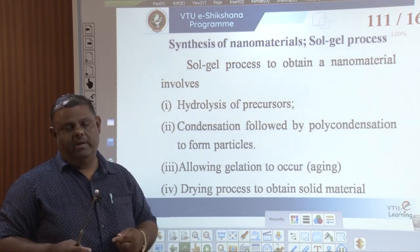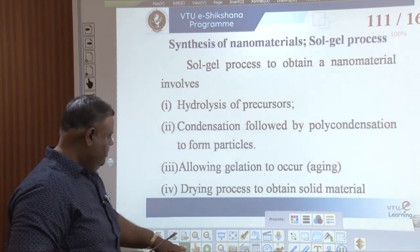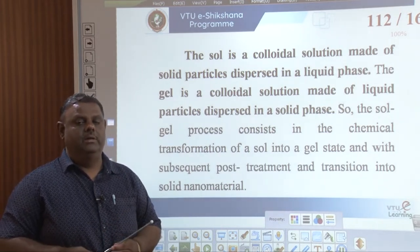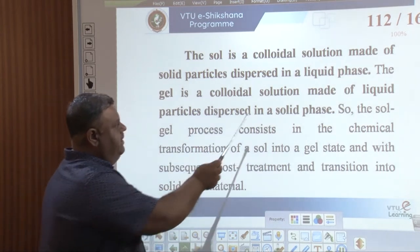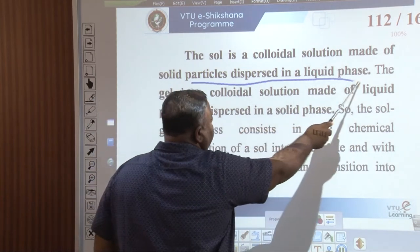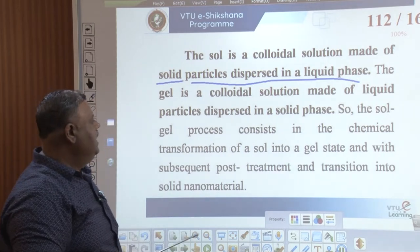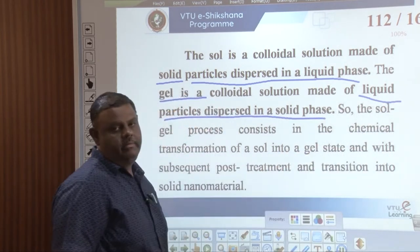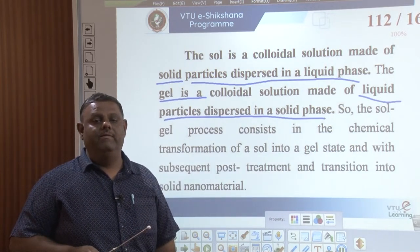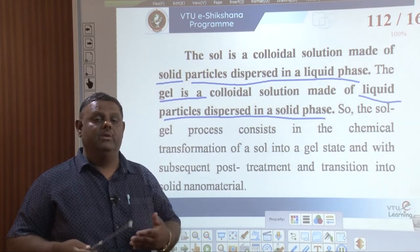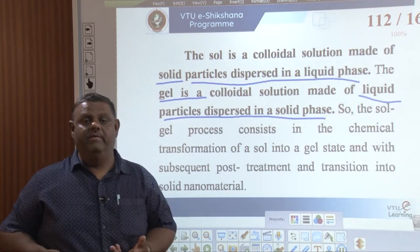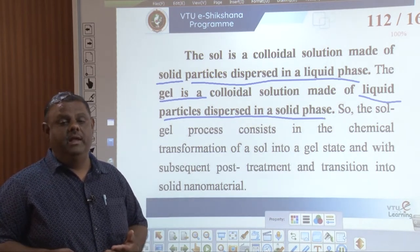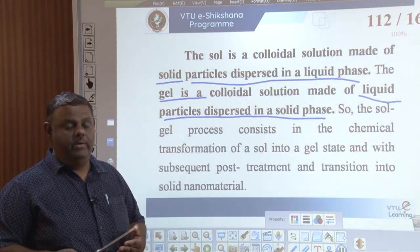Aging means allowing the particles to grow to a bigger size. A sol is a colloidal solution made up of solid particles dispersed in a liquid phase. A gel has liquid particles dispersed in a solid phase. We prepare the sol first, then the precursor undergoes hydrolysis and takes on a jelly form. The gel then undergoes aging and dehydration to arrive at the nanomaterial.